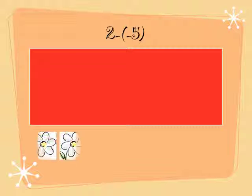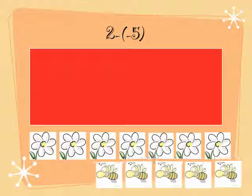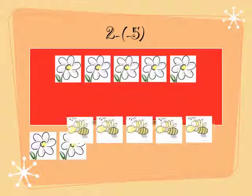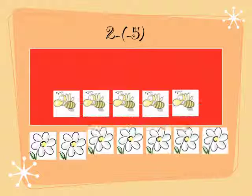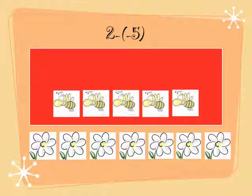Our fourth problem is 2 minus negative 5. There are 2 flowers in the garden. Now, how do we take away 5 bees from 2 flowers while there are no bees there? To do this, we need to add 0 pairs. Now, we can take away 5 bees. And therefore, we have 7 flowers left.